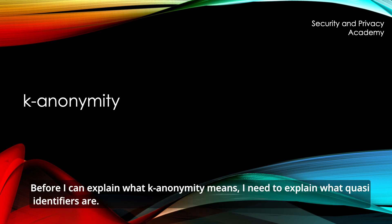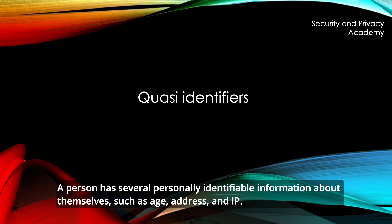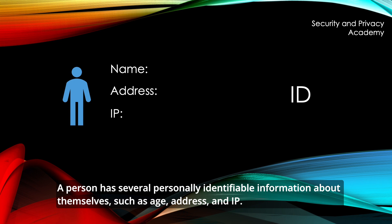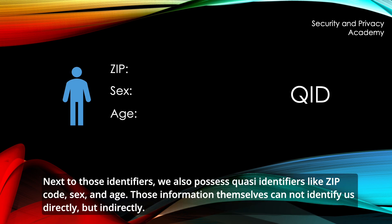Before I can explain what K-Anonymity means, I need to explain what quasi-identifiers are. A person has several personally identifiable information about themselves, such as name, address and IP. Next to those identifiers, we also possess quasi-identifiers like zip code, sex and age. Those information themselves cannot identify us directly, but indirectly.